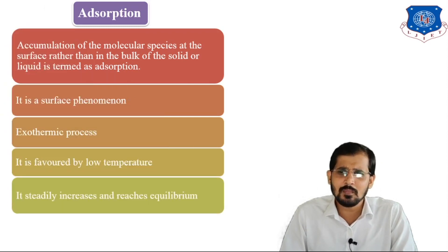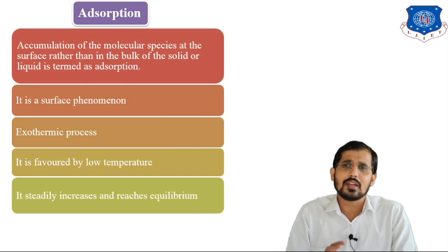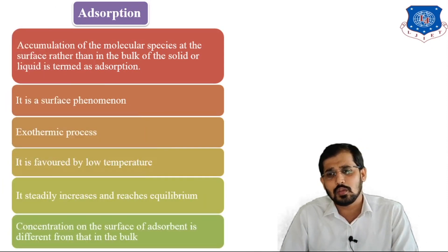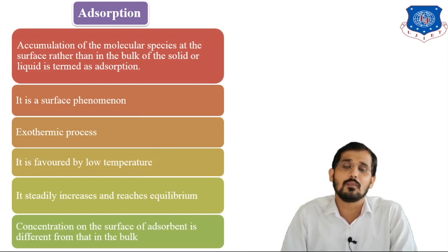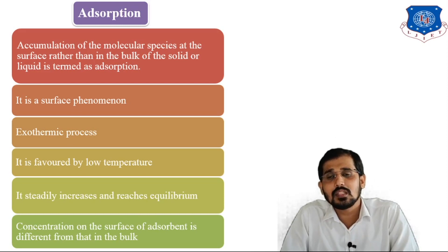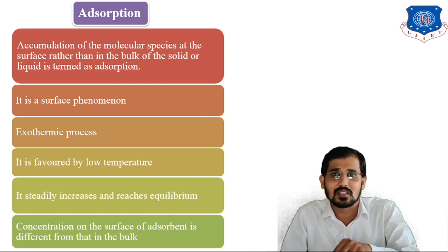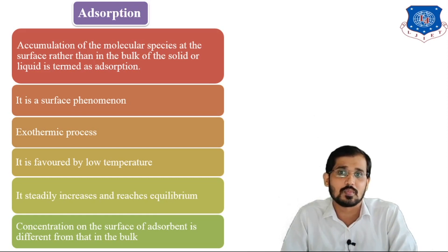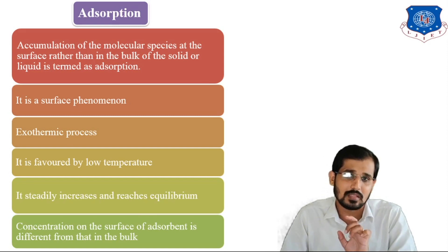Adsorption steadily increases until it reaches equilibrium, beyond which adsorption is not possible. The concentration on the surface of the adsorbent is different from that in the bulk — unlike absorption, where substance is uniformly distributed inside, in adsorption it is not uniformly distributed over the surface. The phenomenon is dependent on surface area: larger surface area means a larger rate of adsorption.